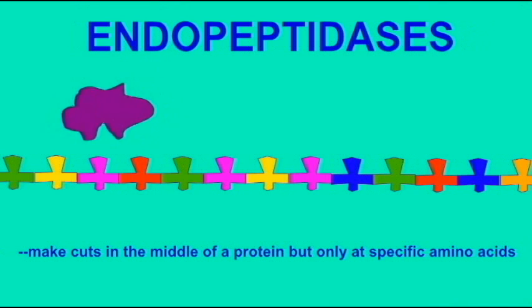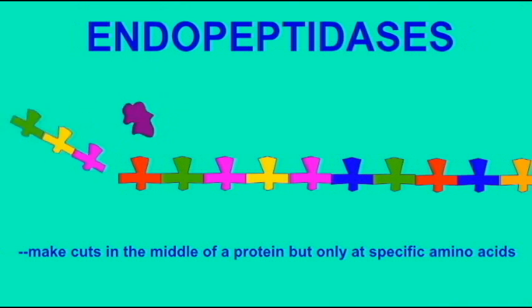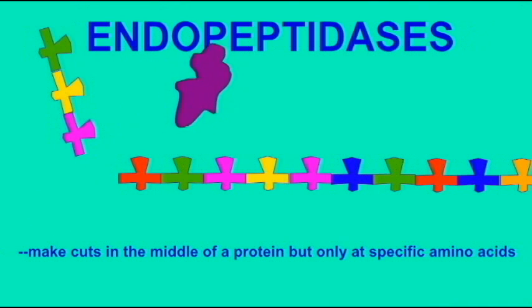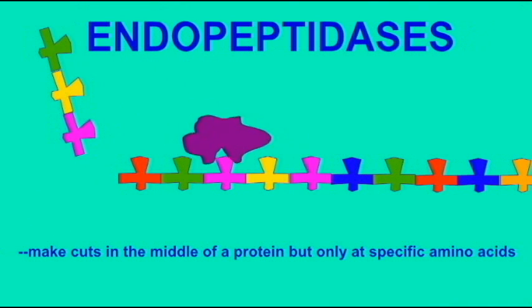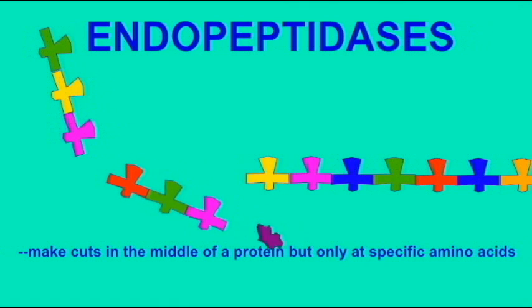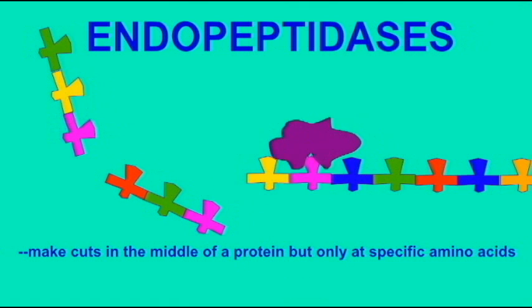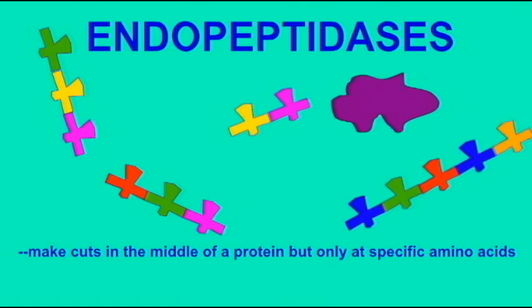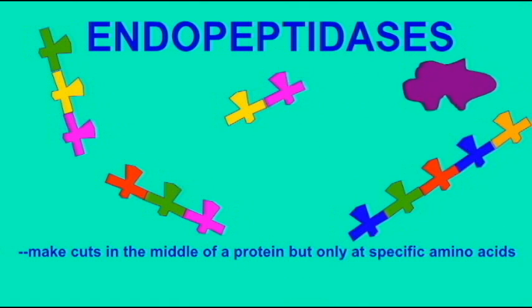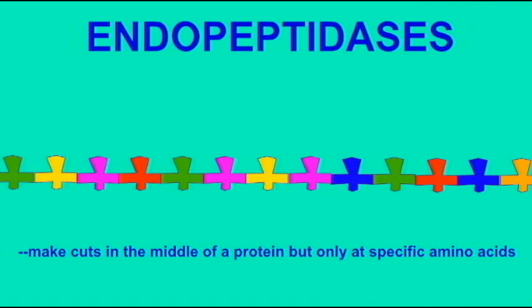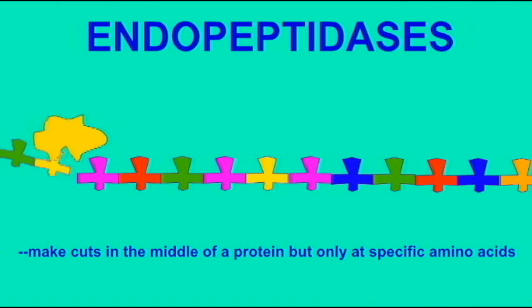In genomes, including the human genome, there can be a large number of enzymes which break down proteins, known as proteases. The number of proteases and their homologues in the human genome is thought to be more than 500.